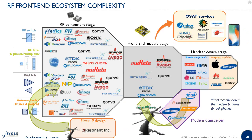In terms of RF ecosystem complexity: at the module stage, there are only five suppliers who supply front-end modules — Broadcom, Murata, Skyworks, Qorvo, and Qualcomm TDK (now merged). Then there are various companies supplying individual components like switches, filters, power amplifiers, and tuners. There are quite a few companies in filter IP design, different OSATs, and modem suppliers including Qualcomm, Samsung, and Intel. Intel recently exited the modem business for cell phones (though they will continue for PCs, servers, and infrastructure).